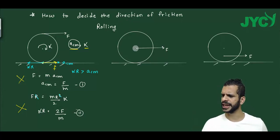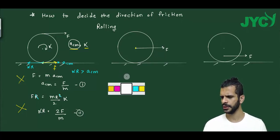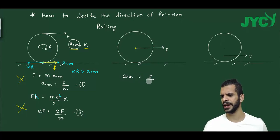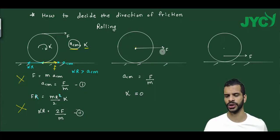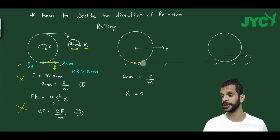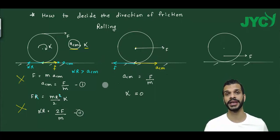Now let's see the second example. In the second example, force F is applied at the center of mass, acting forward. So acceleration of center of mass equals F/m. What is alpha here? Alpha is zero, because the force passes through the center of mass, so torque is zero, hence alpha is zero. So the contact point will definitely move forward. Therefore, to stop it, friction must act backward. In the second case, friction direction is backward.